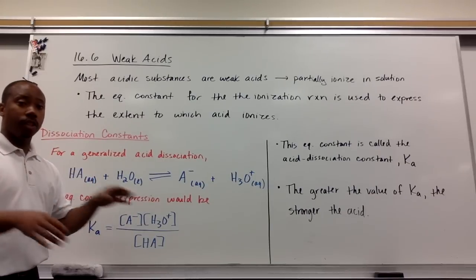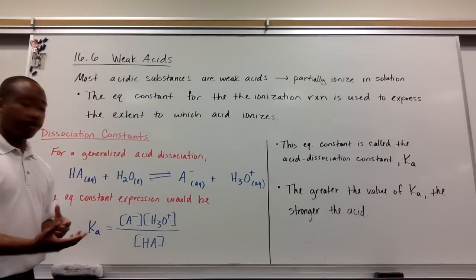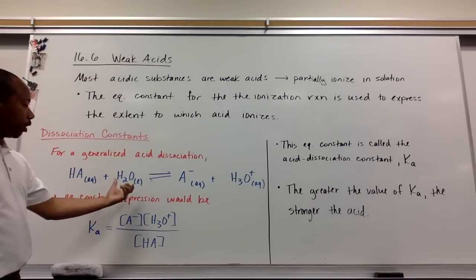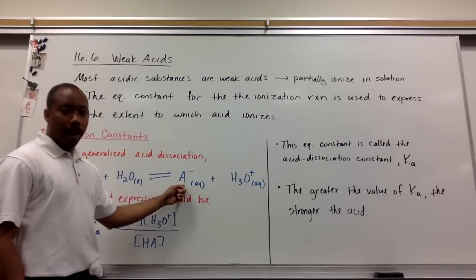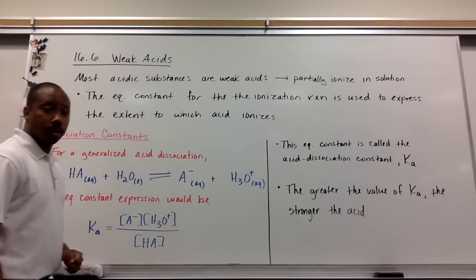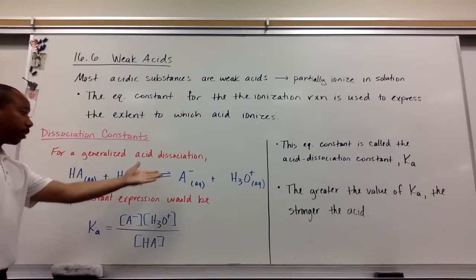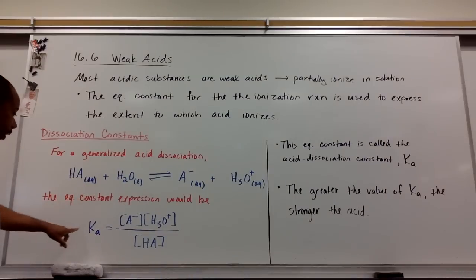Dissociation happens in water. You put an acid in water, it dissociates. According to Arrhenius, you expect to get H+ in solution. So an acid dissociates in water and will dissociate into A-, your conjugate base, and H3O+, your conjugate acid. If I were to put this equation into an equilibrium expression, I get K sub A.